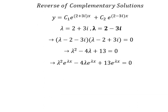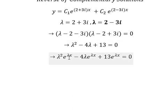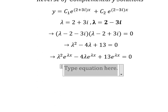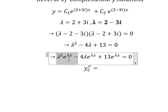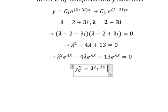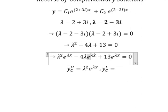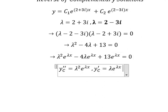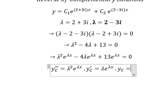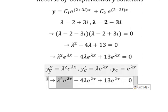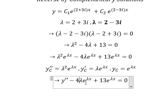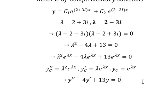We know that this term is about the second derivative of yc, this one is about the first derivative of yc, and the last one is about yc itself. So in this case we need to transform this into the final form, and this is the answer because we no longer have the arbitrary constants.